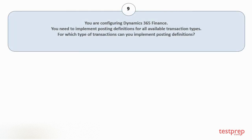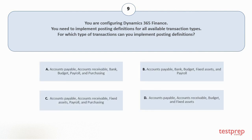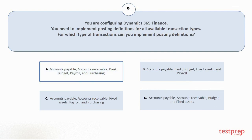Question number 9: you are configuring Dynamics 365 Finance. You need to implement posting definitions for all available transaction types. For which type of transactions can you implement posting definitions? Your options are: A. Accounts payable, accounts receivable, bank, budget, payroll, and purchasing. B. Accounts payable, bank, budget, fixed assets, and payroll. C. Accounts payable, accounts receivable, fixed assets, payroll, and purchasing. D. Accounts payable, accounts receivable, budget, and fixed assets. The correct answer is option A.